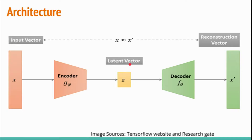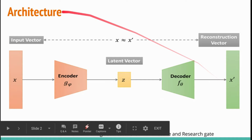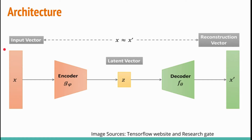The difference between the output representation and the input representation is called the reconstruction error — the error between your input vector and output vector. One predominant use case of autoencoders is anomaly detection, and the reconstruction error between the output and input is what we use to detect whether an input is an anomaly or not.